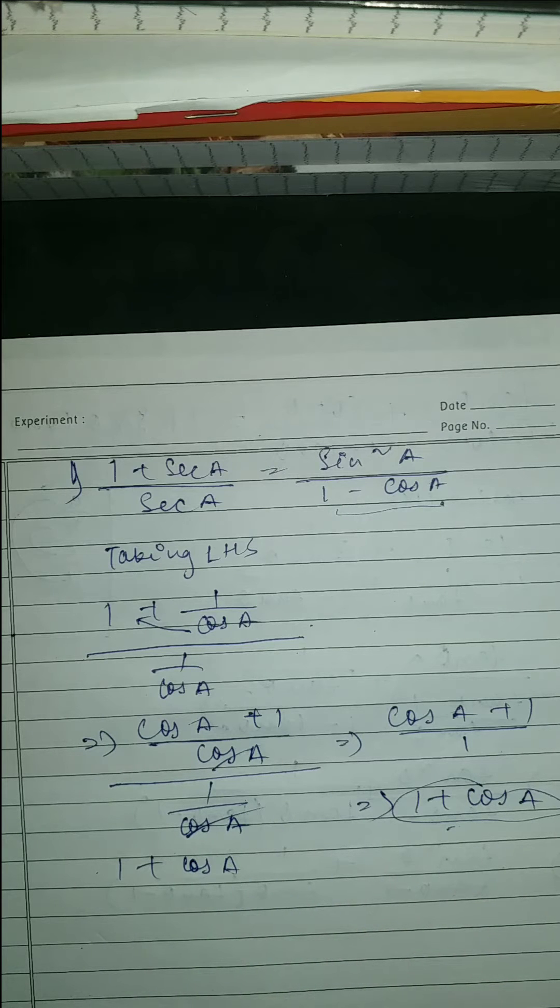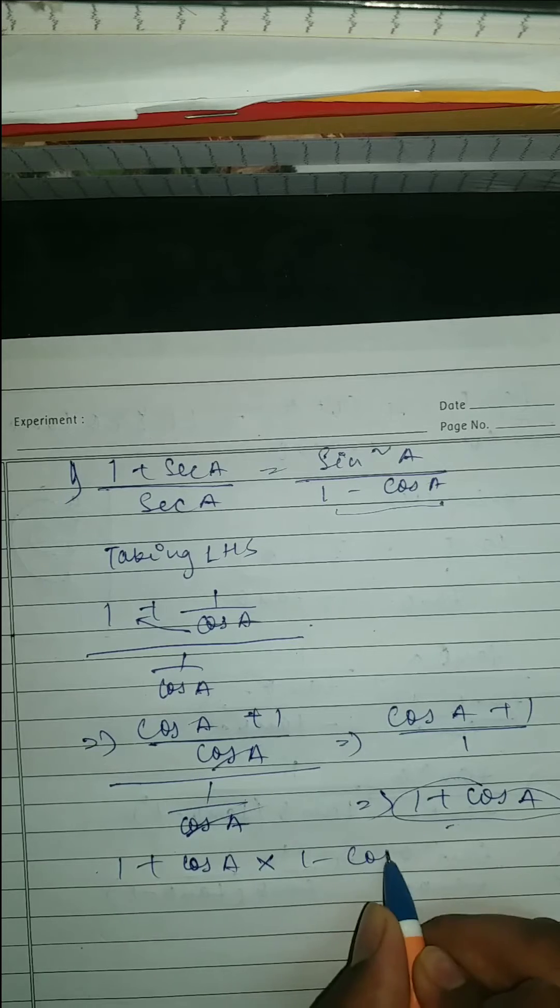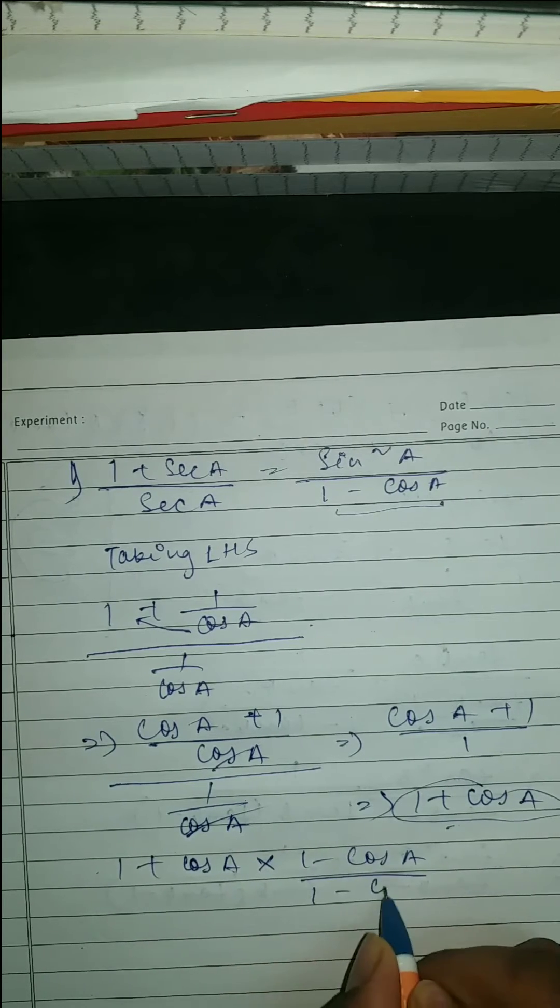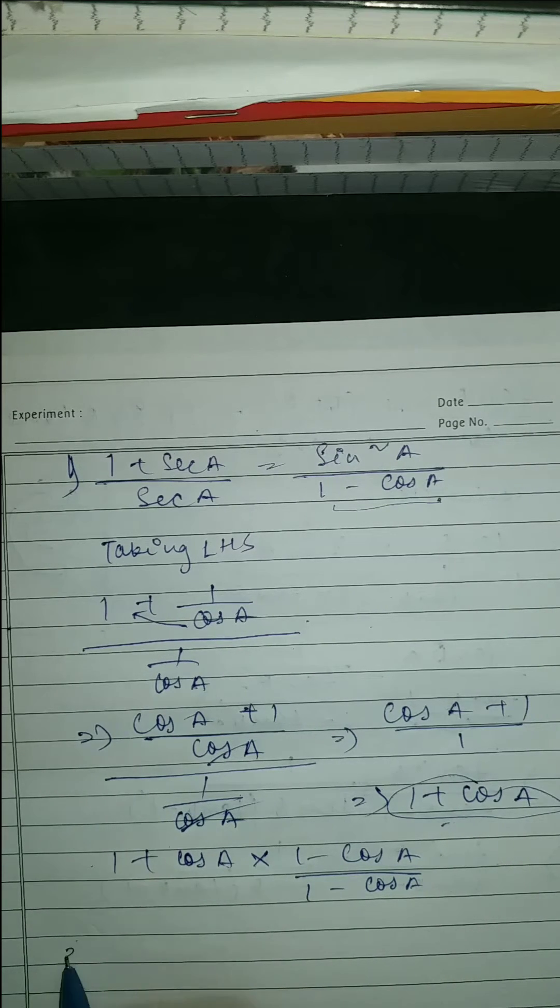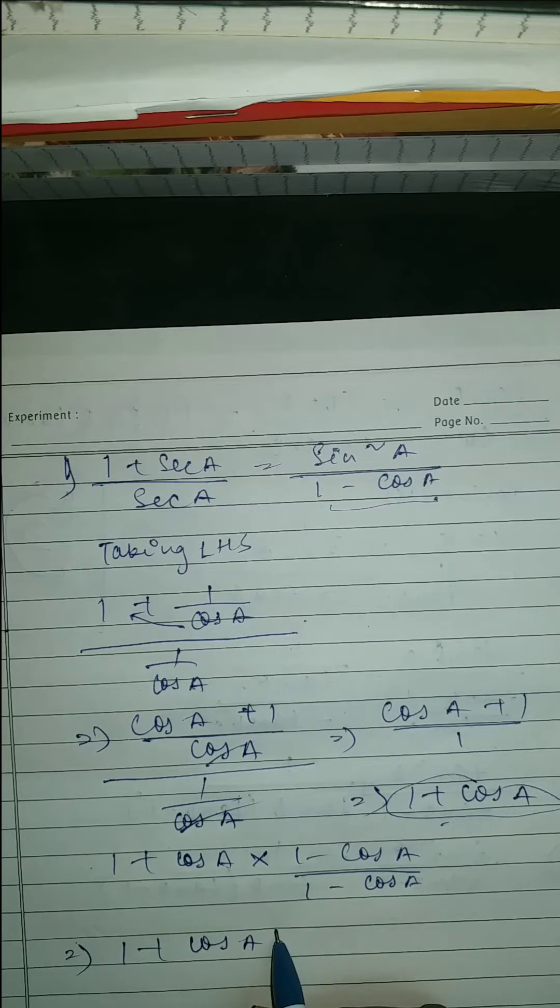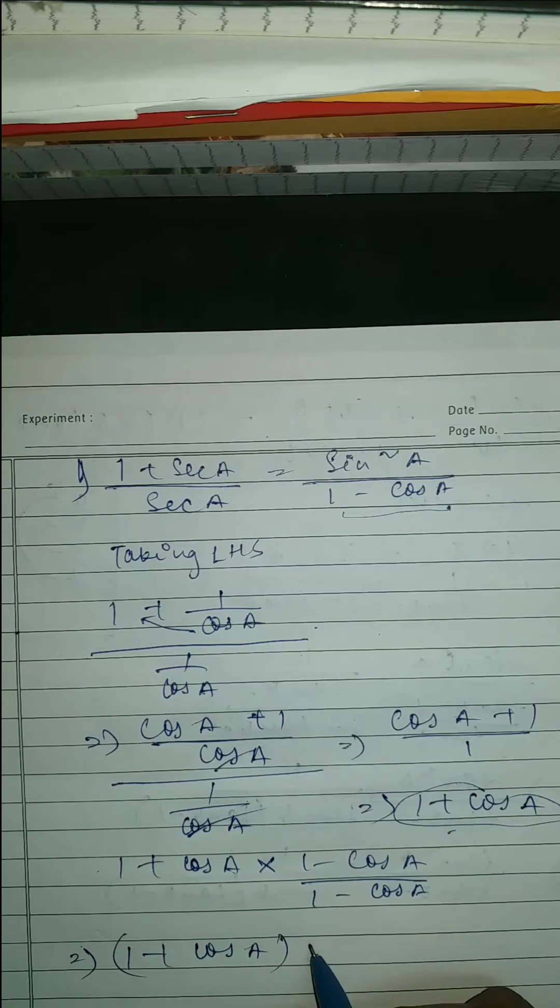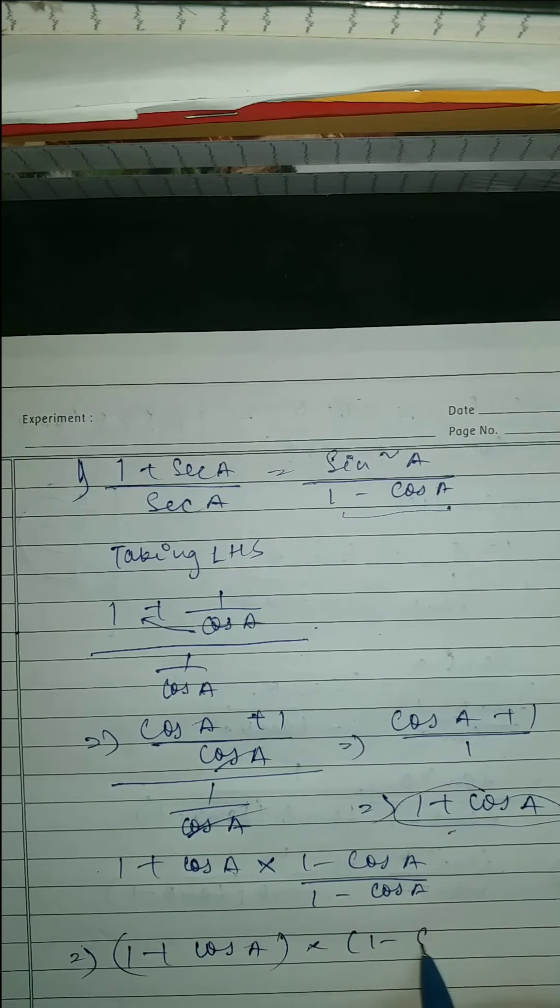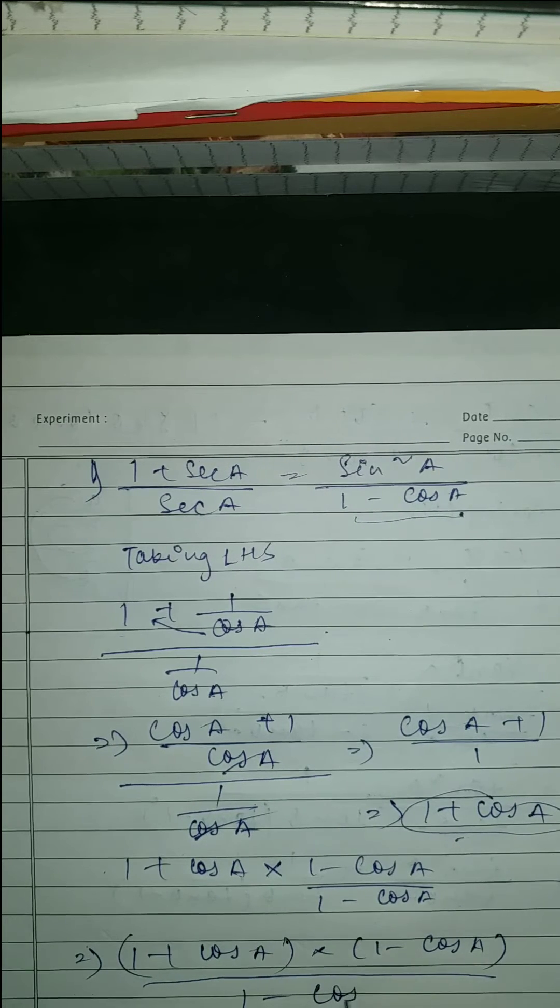we're going to rationalize this. So this should be is equal to 1 plus cos A. As you can see, 1 plus cos A and into 1 minus cos A upon 1 minus cos A.